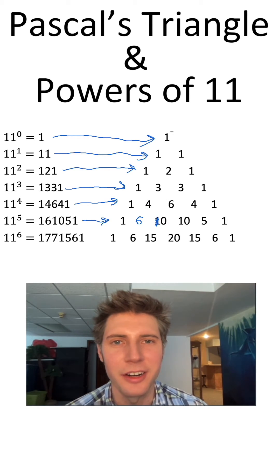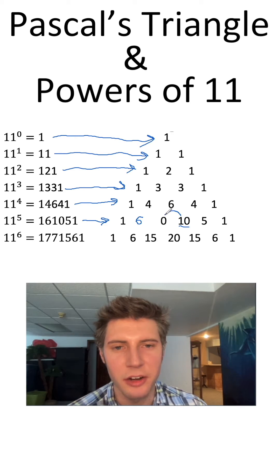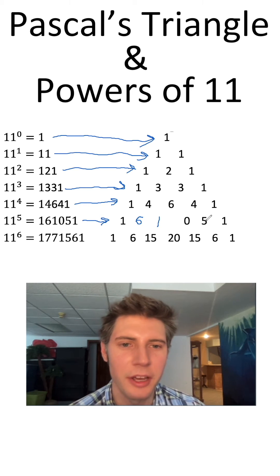So this is a 0 right here and we have to do the same thing for this 10. This 1 is going to get carried over here making this 0 a 1 and this right here is going to be a 0, and then we have a 5 and 1.